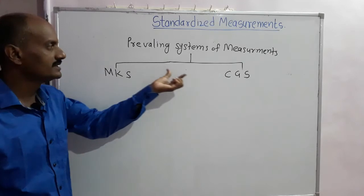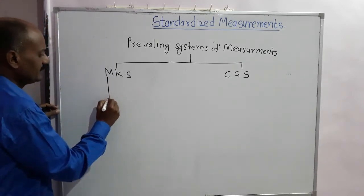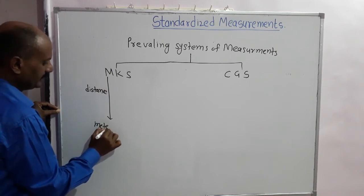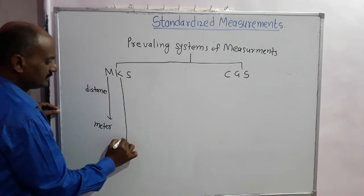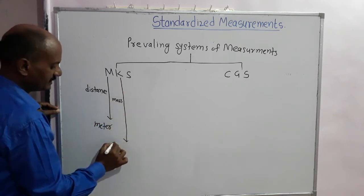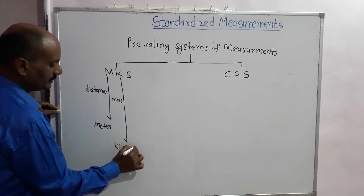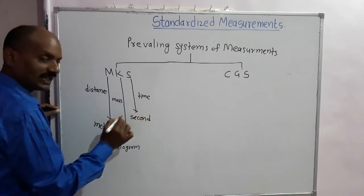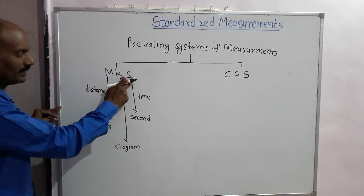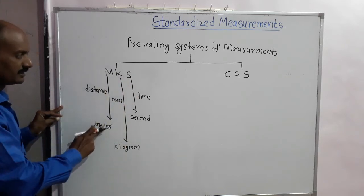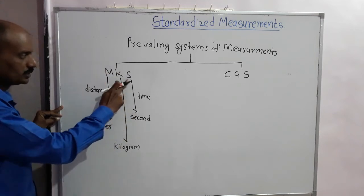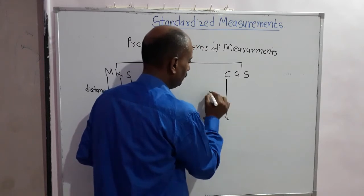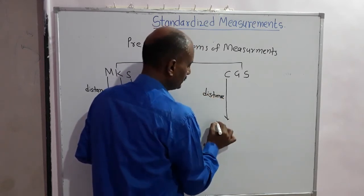These two systems are very important. In the MKS system, distance is measured in meter, mass is measured in kilogram, and time is measured in second.